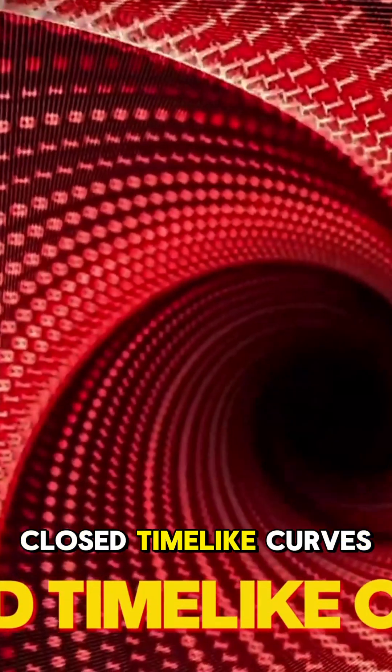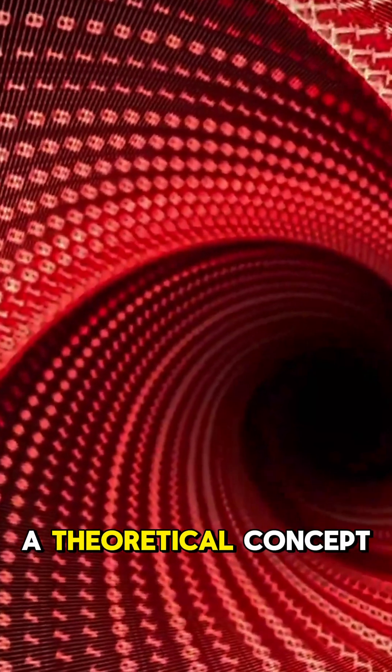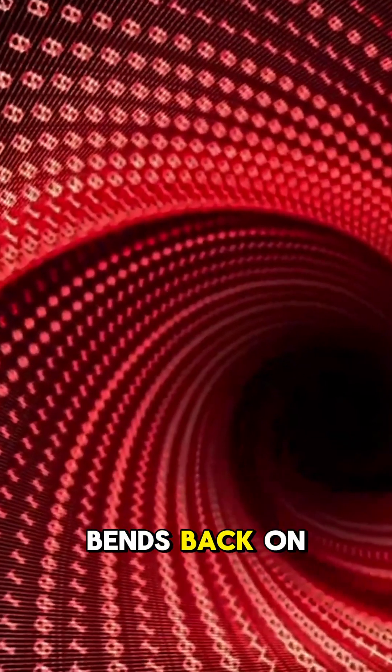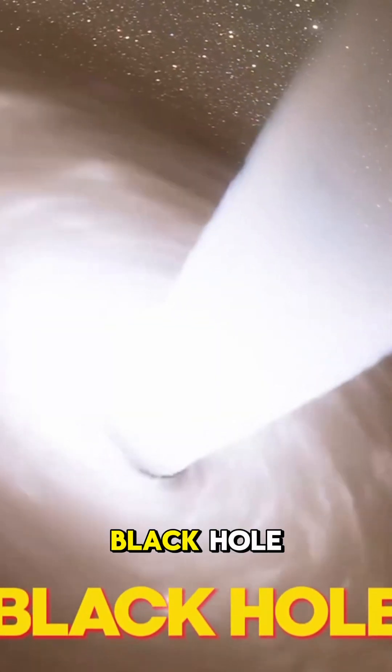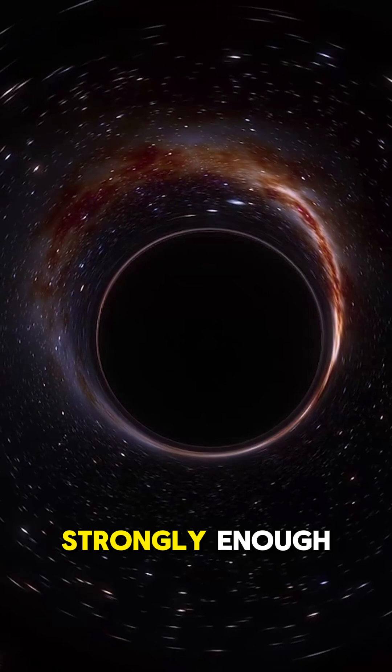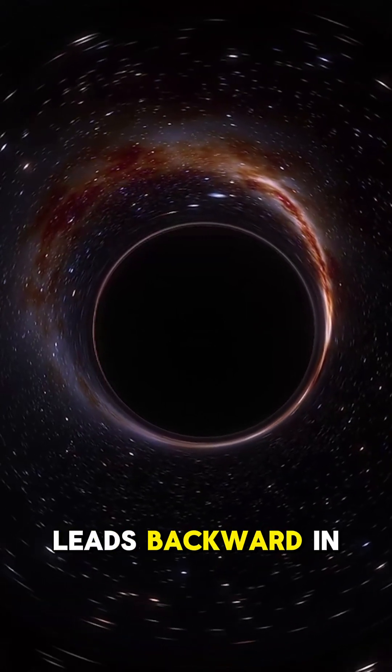One idea involves closed time-like curves, a theoretical concept where spacetime bends back on itself, creating a loop. Some physicists believe that if a massive object, like a spinning black hole, twists spacetime strongly enough, it could create a path that leads backward in time.